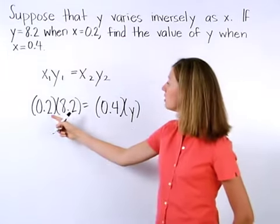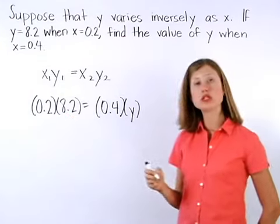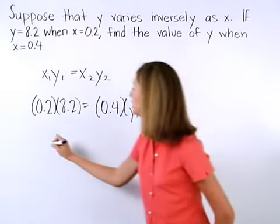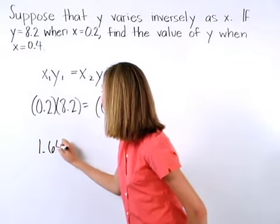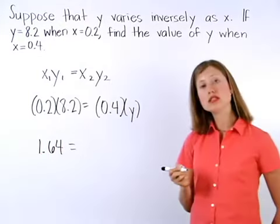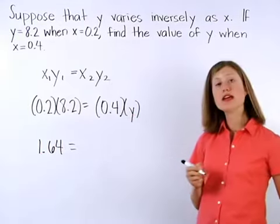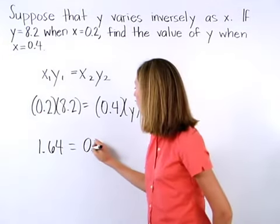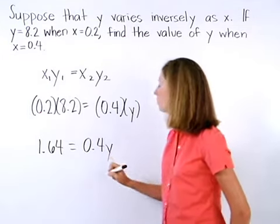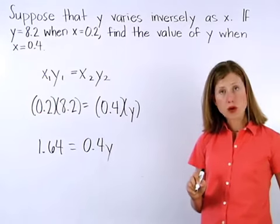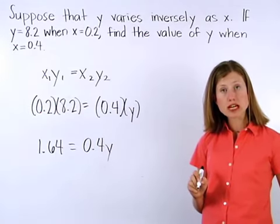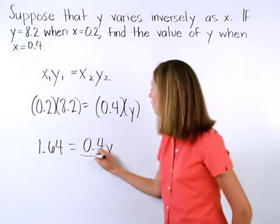Simplifying, 0.2 times 8.2 is equal to 1.64. 0.4 times y is equal to 0.4y. Now we solve for y by simply dividing both sides of the equation by 0.4.